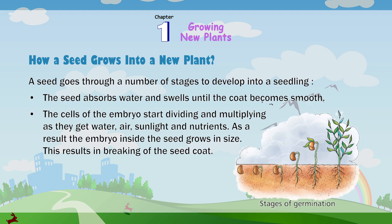The seed absorbs water and swells until the coat becomes smooth. The cells of the embryo start dividing and multiplying as they get water, air, sunlight, and nutrients. As a result, the embryo inside the seed grows in size. This results in the breaking of the seed coat.